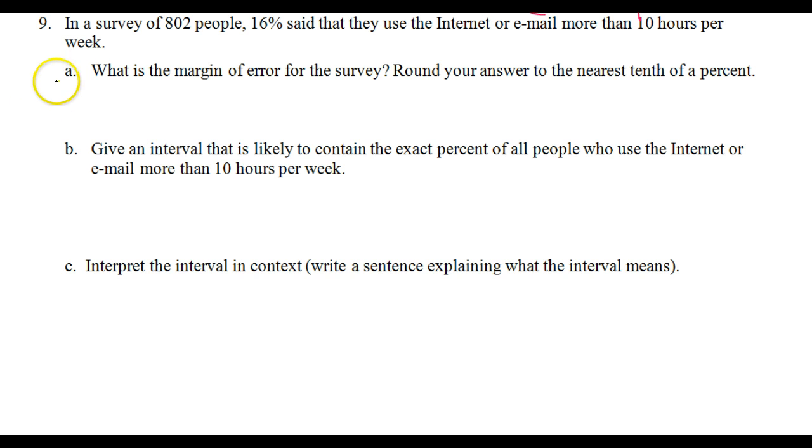Well, we have already learned in previous videos that the margin of error, which I will abbreviate MOE, is given by plus or minus one over the square root of the sample size. N represents the sample size. So in this case, that margin of error is going to be plus or minus one over the square root of 802. That's the sample size, the number of people surveyed.